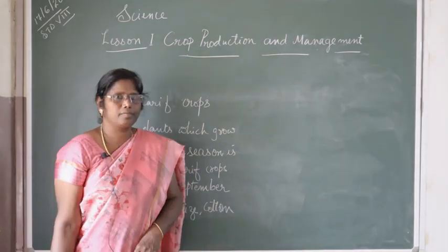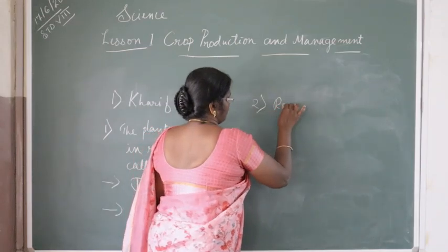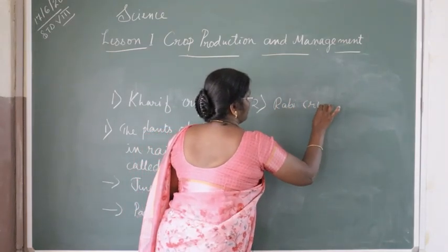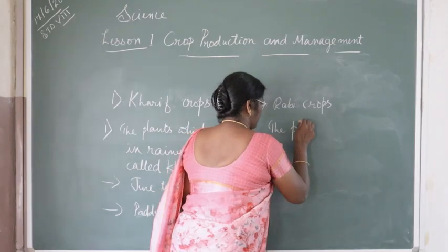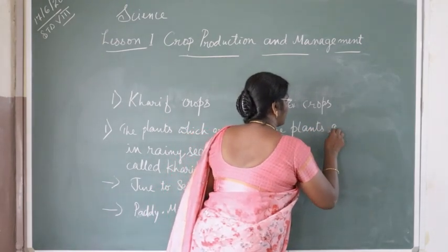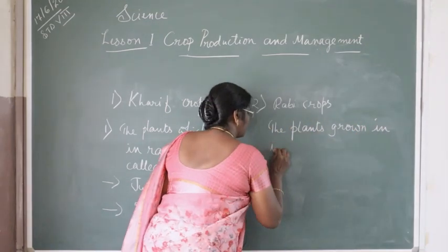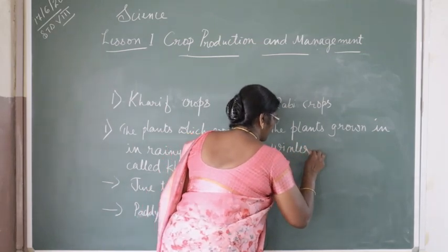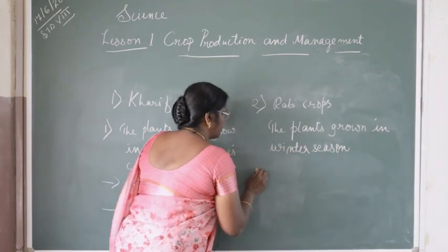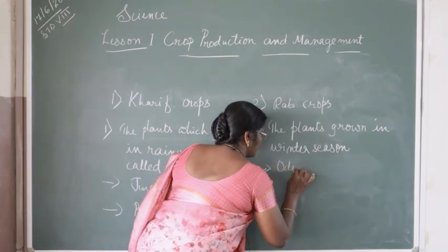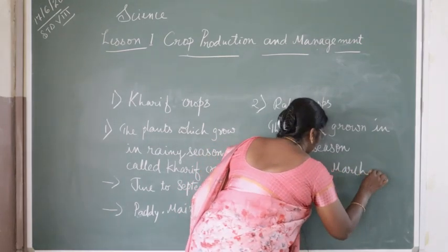Rabi crops are grown in the winter season. The time period for Rabi crops differs from Kharif crops.